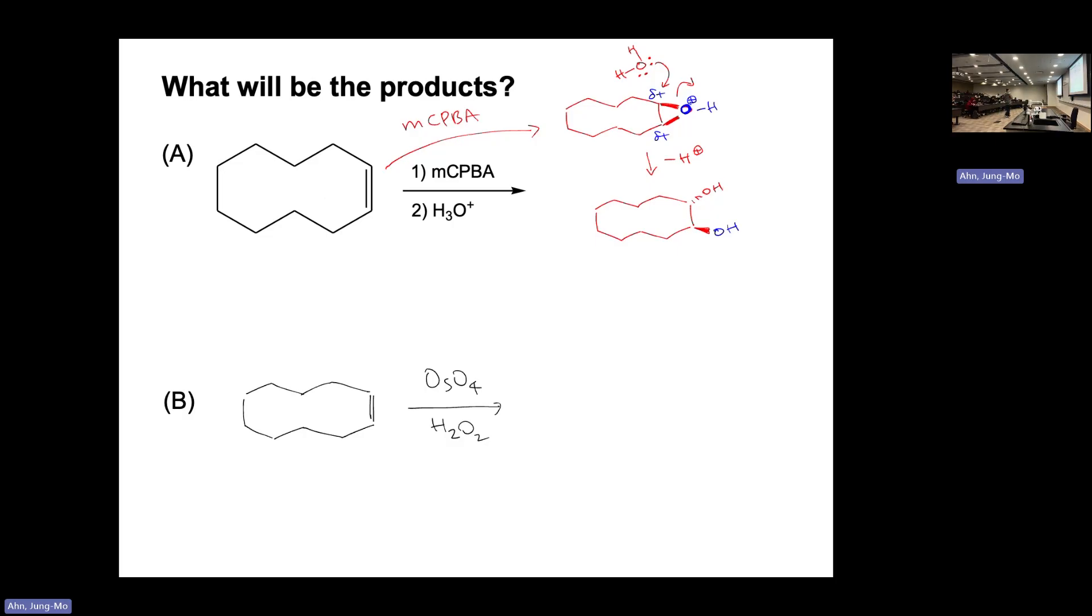If you do the same thing with osmium tetroxide and peroxide, then you are getting a diol added, but on the same side. We can see that these two reagents are making different products - the only difference is stereochemistry. So that's the reason you've got to show stereochemistry in the products.